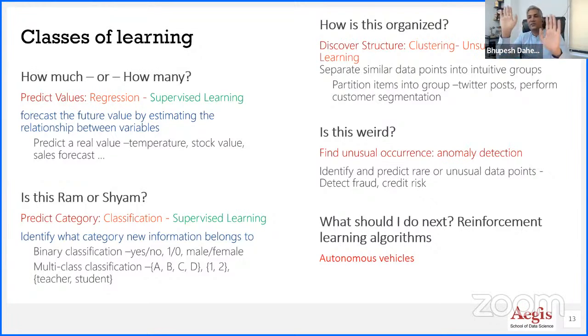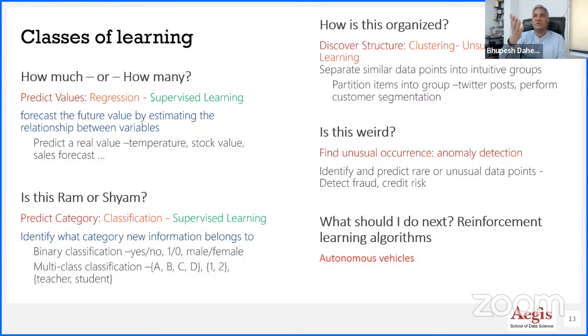If you want to train a machine, you give it a hundred images of cats and a hundred images of dogs — just like a human being is taught — and the machine will be able to easily classify whether it's a dog or a cat.